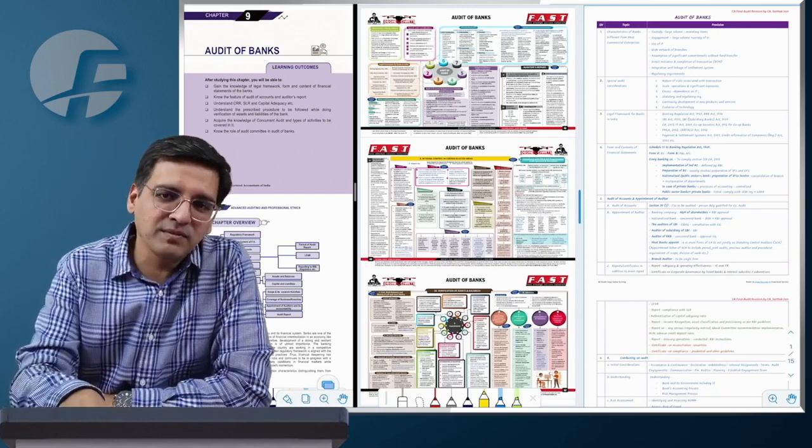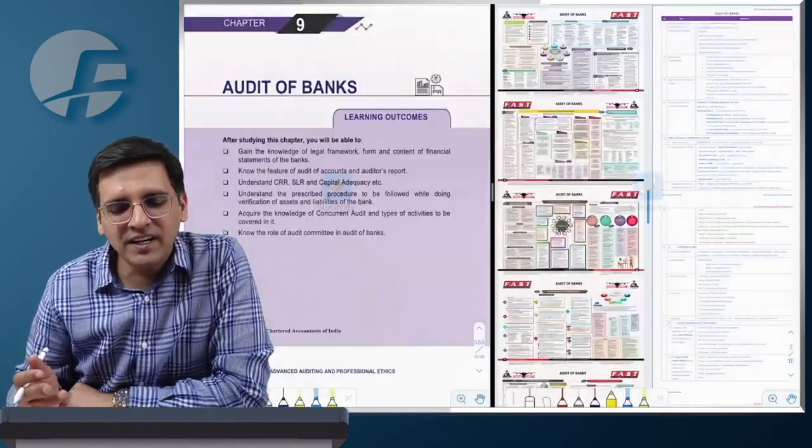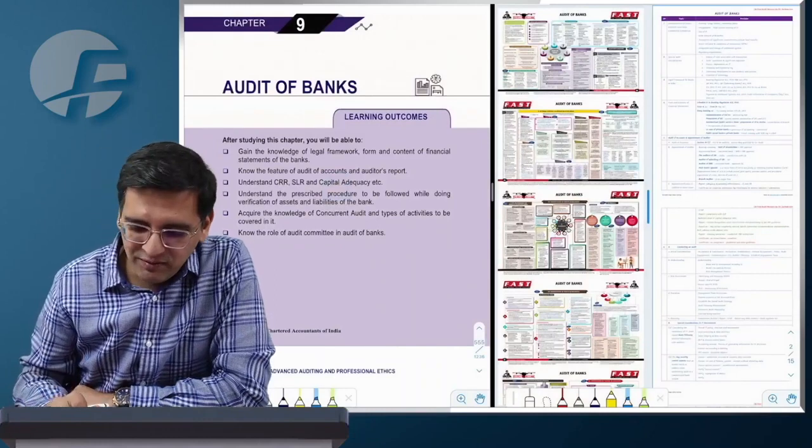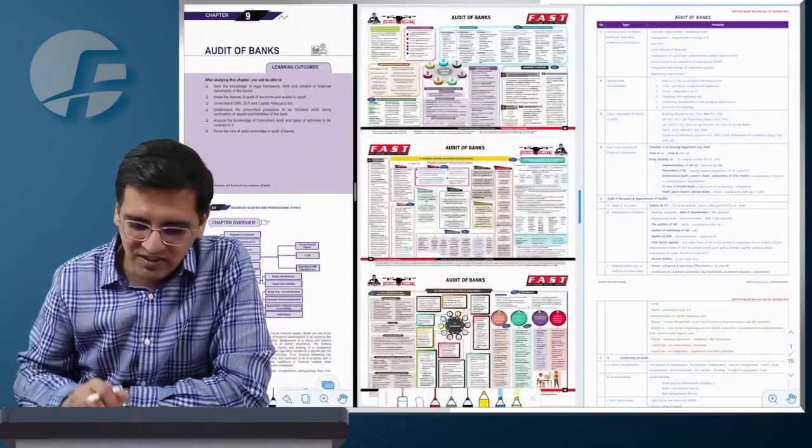Hello everyone. We are going to revise one of the lengthiest theoretical chapters of your subject of CFA Final Audit, which covers 1 to 10 mark MCQs and 4 to 5 mark descriptive questions as you usually get to see. This is Audit of Banks.